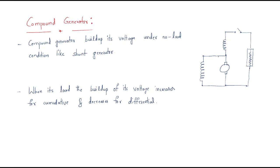Next is the compound generator, which is a combination of both series and shunt windings. The series winding has resistance RSE and the shunt winding has resistance RSH. The generator produces EMF and the load can be varied. An important characteristic is that the compound generator builds up its voltage under no-load condition, similar to the shunt generator.